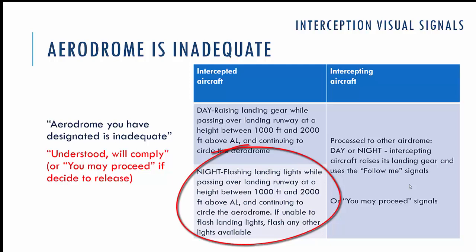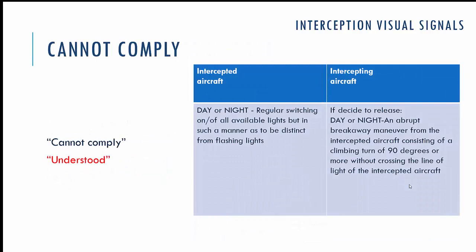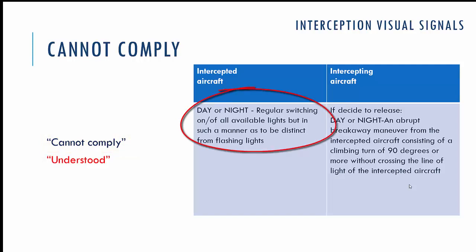If the aircraft is not equipped with landing lights, flash any other available navigation lights. The intercepting aircraft can then give you a 'follow me' signal to proceed to another aerodrome, or give you a 'you may proceed' signal. In a situation where you cannot follow the instructions of the intercepting aircraft, you give the visual signal 'cannot comply.' In day or night time, this is done by regularly switching all available lights on and off in a manner that is distinct from the irregular flashing.